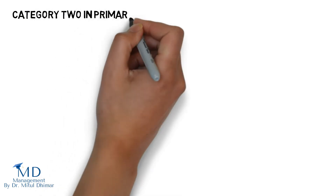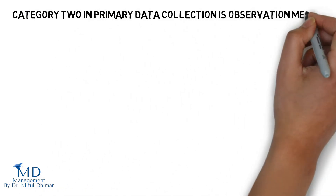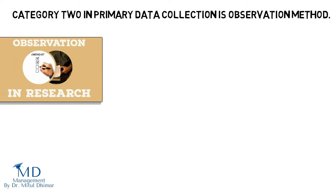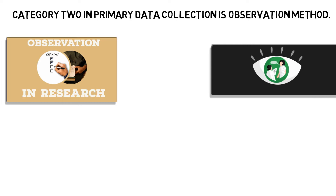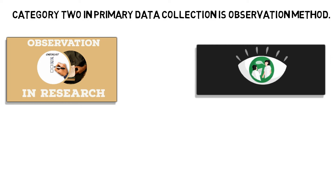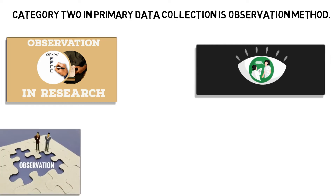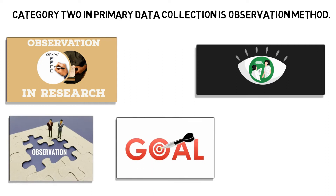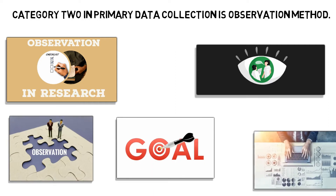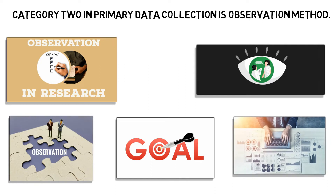Category two in primary data collection is observation method. Observation research is a qualitative research technique where researchers observe participants' ongoing behavior in a natural situation. Depending on the type of observation research and the goal of the study, the market researcher will have varying levels of participation in the study.